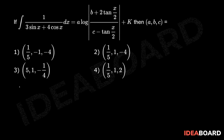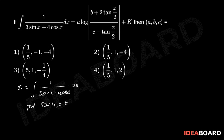Let i equal to integration of 1 divided by 3 sin x plus 4 cos x dx. Here the substitution is: put tan(x/2) equal to t. Differentiating both sides, we get 1/2 into secant square(x/2) into dx equals dt. That implies dx equals 2 dt by secant square(x/2).